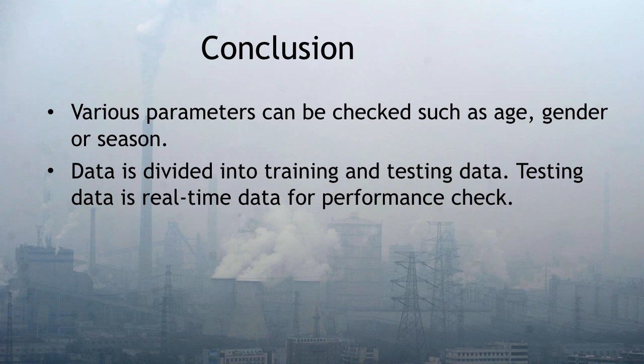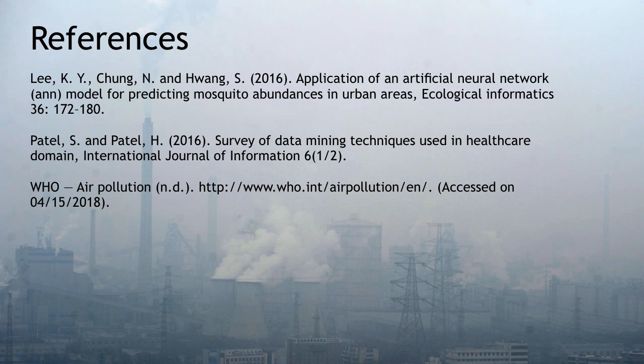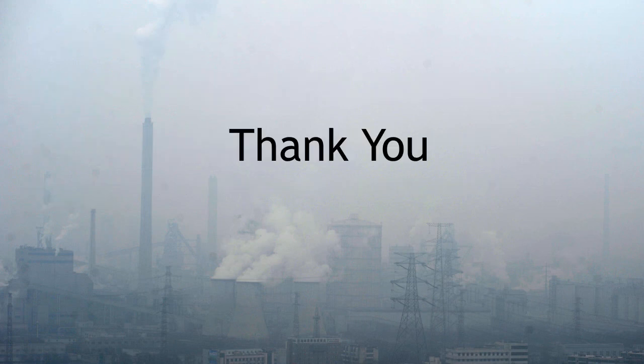In conclusion, various parameters can be checked in this prediction, such as age, gender, or season in which air pollution is causing heart disease. As data is divided into two parts — training data and testing data — on real-time data, performance check can be accurate. These are the references. Thank you.